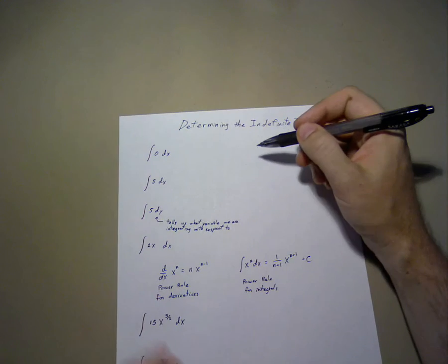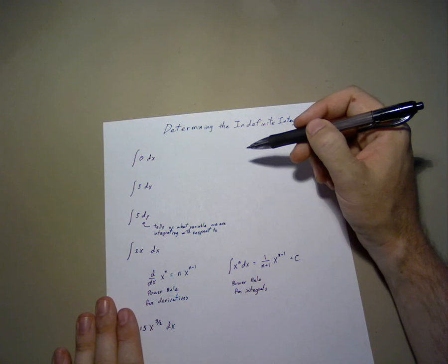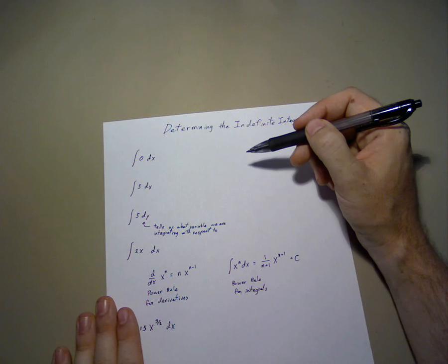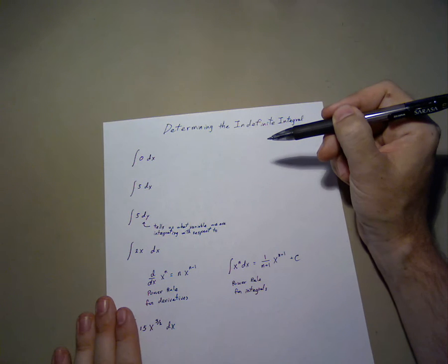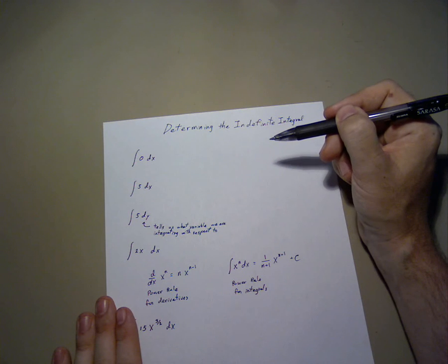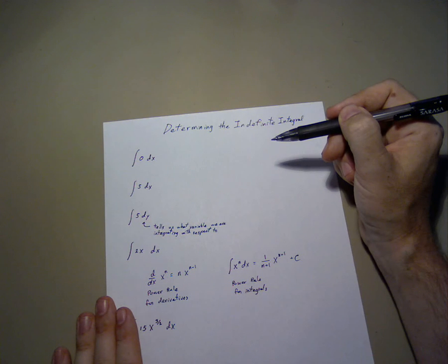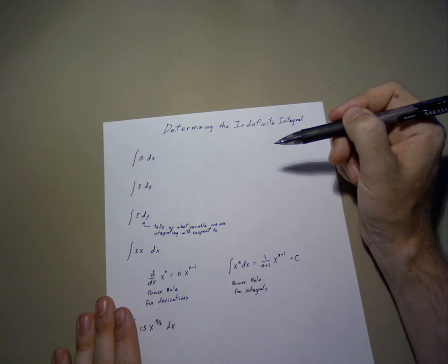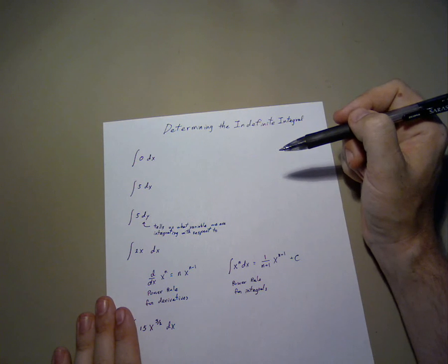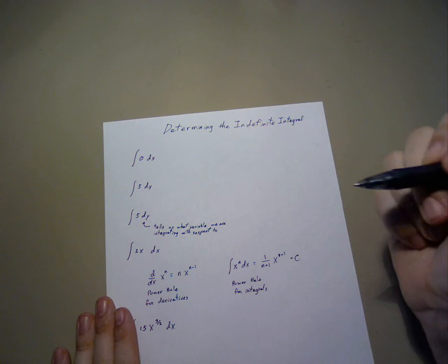When we first started learning about derivatives, we first used the limit of the difference quotient to find the derivative, then we learned rules to make it easier. Likewise, with integrals, we started with the Riemann sum being the actual definition, and now we're going to learn rules. In this calculus class, we're only going to begin doing that. Most of the rules we will learn in calculus 2 and 3, primarily calculus 2.